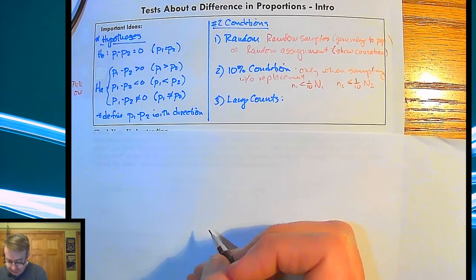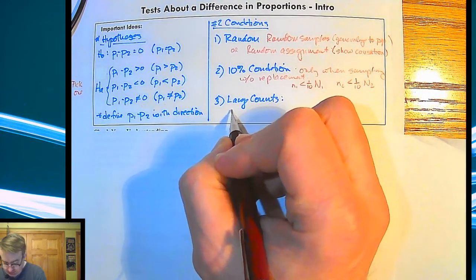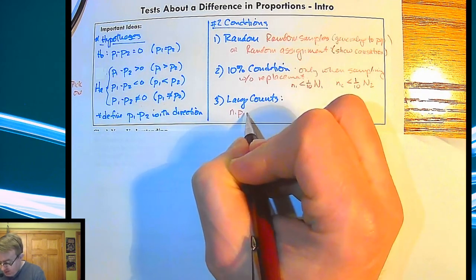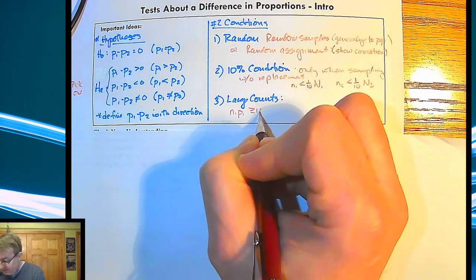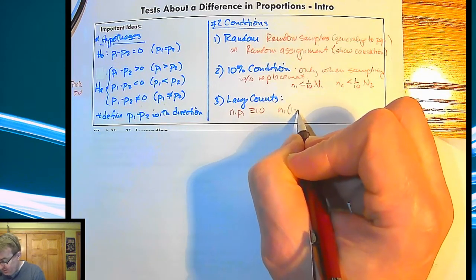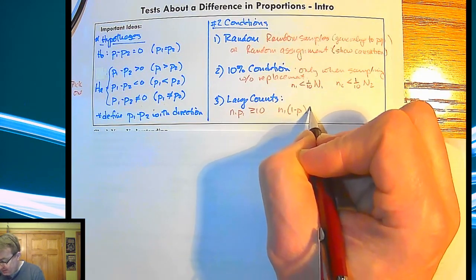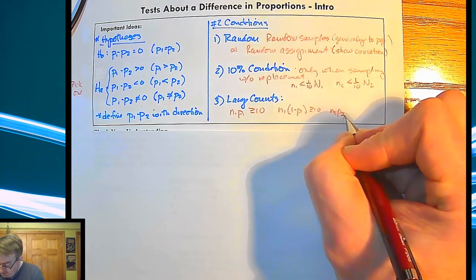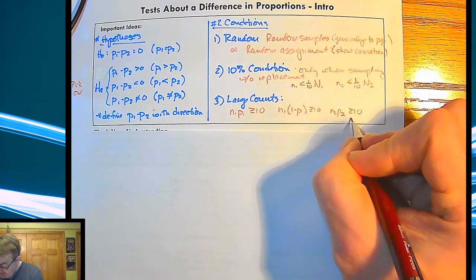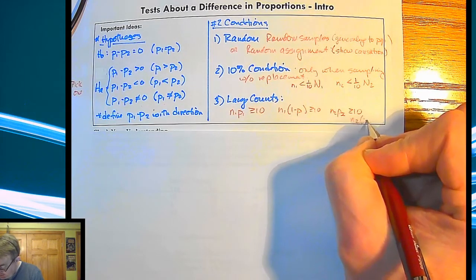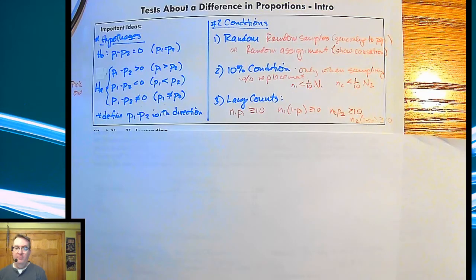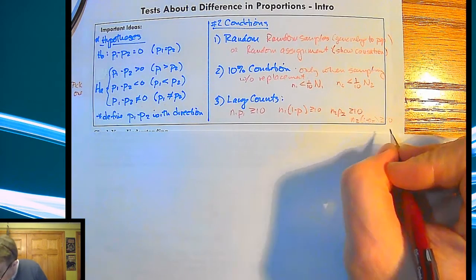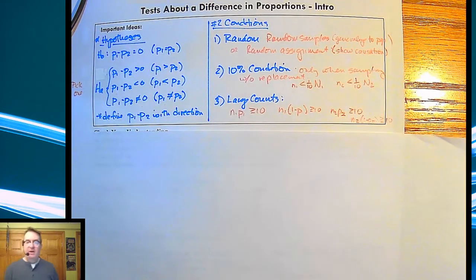And then large counts. Remember, that's the same thing as usual. Number of successes and failures have to be bigger than 10. So N1 times P1 has to be bigger than or equal to 10. N sub 2 times P sub 2 has to be bigger than or equal to 10. And then N sub 2 times 1 minus P sub 2 has to be bigger than or equal to 10. Sorry, I froze there for a second. But that will get you set up.